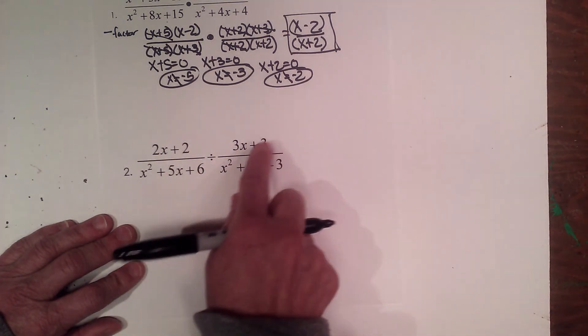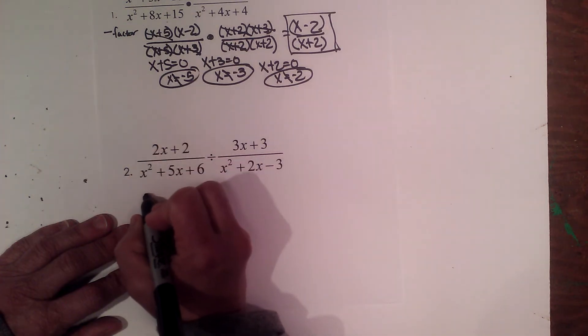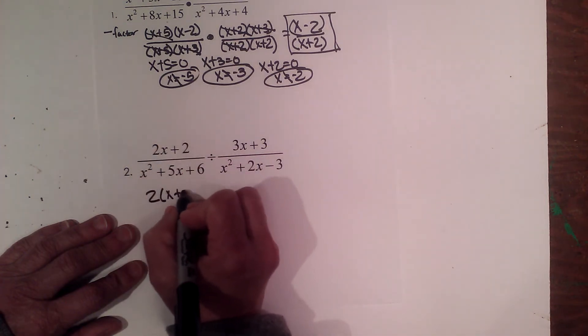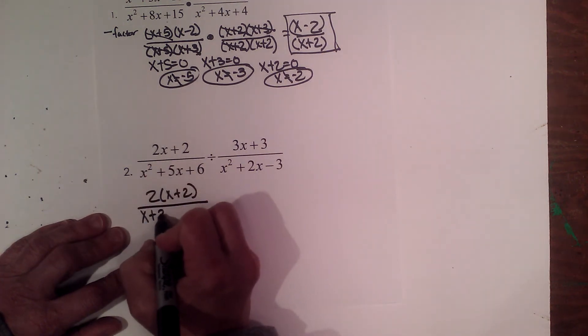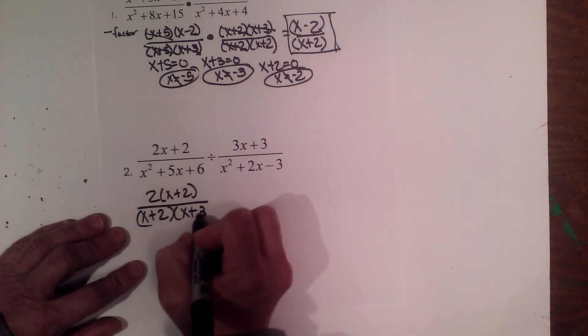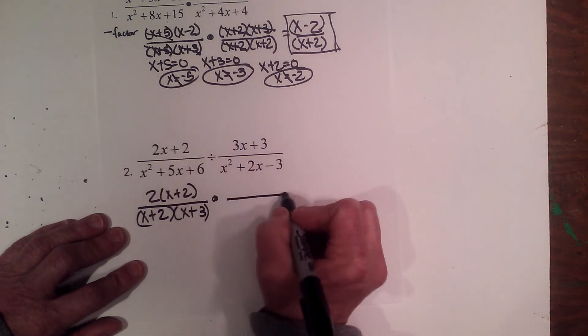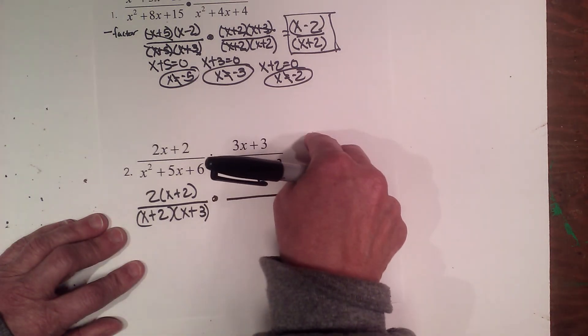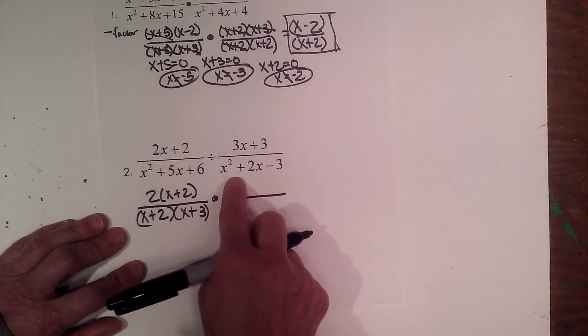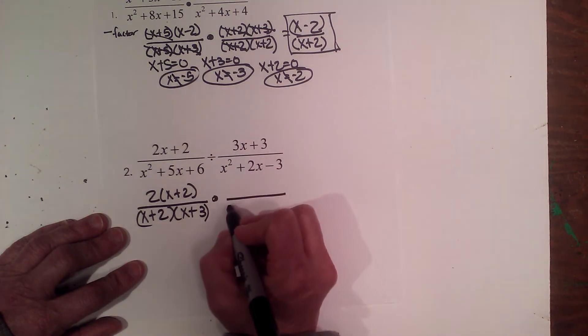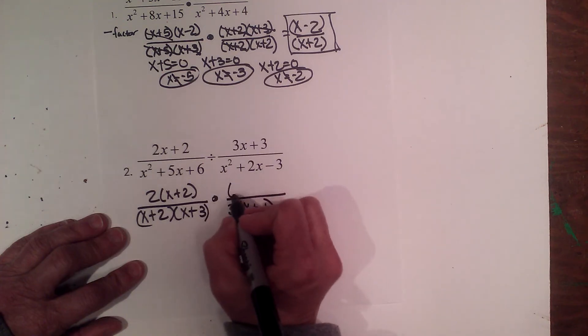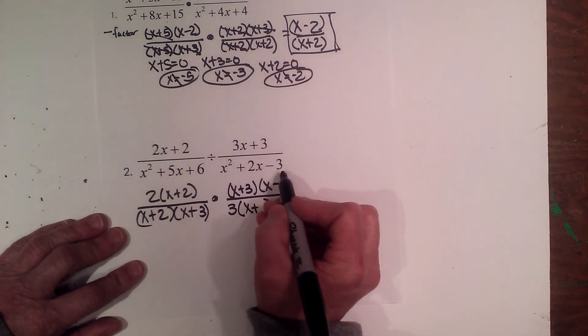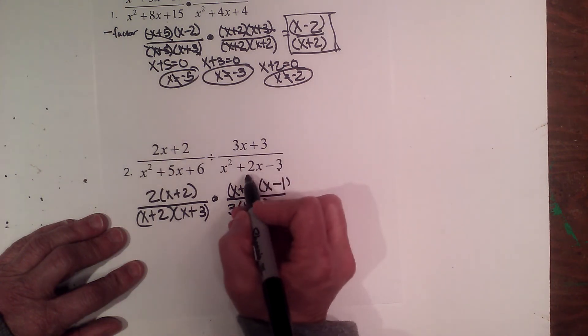So let's factor the numerator first. So I have a 2 times x plus 2. My denominator of the first term is x plus 2, x plus 3. I'm going to change this to multiplication, and I'm going to take the reciprocal of the second problem. Now I'm going to go ahead and factor it into the reciprocal. So this numerator goes to the bottom, and it becomes a 3 times x plus 1. And on top I'm going to have x plus 3 times x minus 1, because that's what multiplies to negative 3 and adds to positive 2.